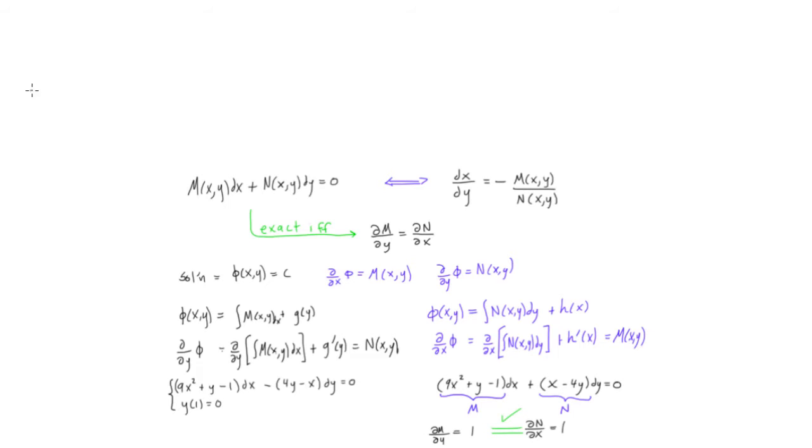So first of all, we're going to call our integrating factor mu. You can put it up here. And this is going to be equal to e to the power of the integral of—we really like doing this in differential equations. So we'll have dm/dy, the partial derivative, minus dn/dx, the partial derivative of n with respect to x. And this is going to be all over n.